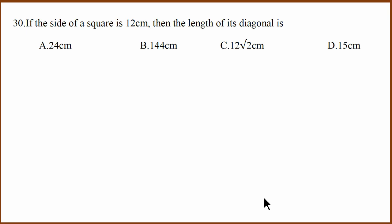30th question. If a side of a square is 12 cm, then length of the diagonal is 12 square plus 12 square equals diagonal square, which means square root of 288, which is 12 root 2.